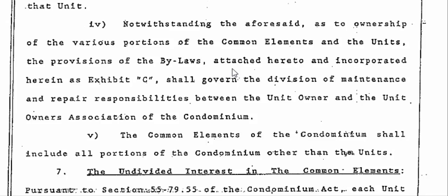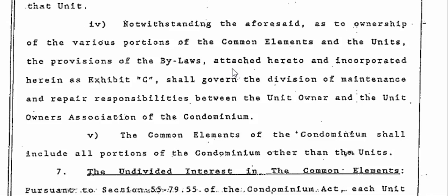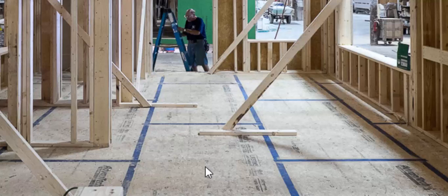Now let's go ahead and look at a few pictures. On this particular picture, what you see here is your floor — this is the unfinished floor. Whether this is concrete or whether this is wood, this part right here from the top of this section down belongs to the association. It is their responsibility to maintain it.